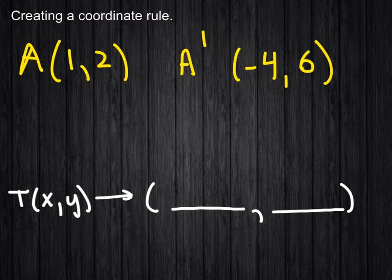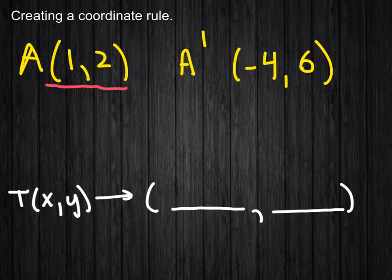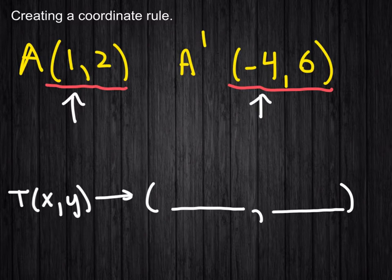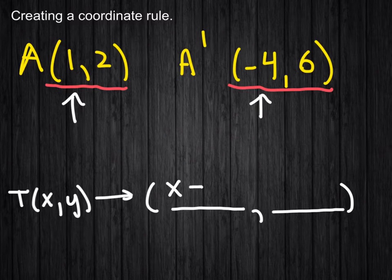And what it's asking you to do is to find the vector that took A at this location to A prime at this location. So, you want to isolate things in terms of the x's first. So, I was at 1 and now I am at negative 4. So, that would be x minus 5, because the x value went down 5.